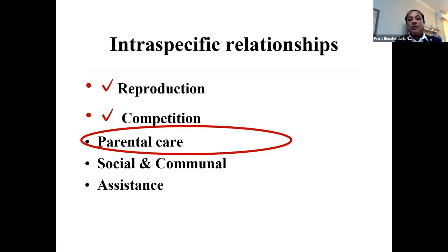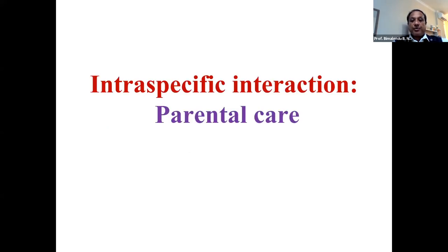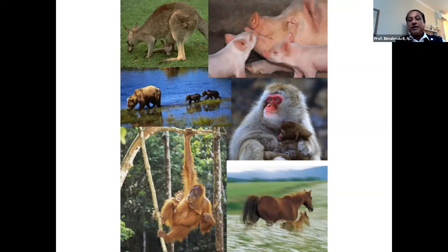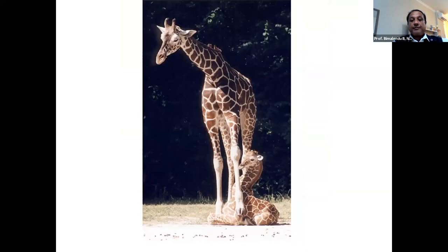From here we move to the third factor: parental care. It's very important because the sustenance of a species depends on the type of parental care shown to offspring. The survivability of offspring is critical for the perpetuation and sustenance of the species population. Both vertebrates and invertebrates show different types of parental care, which ensures the survival of offspring to adulthood, allowing populations to sustain and perpetuate.